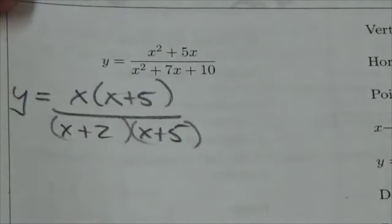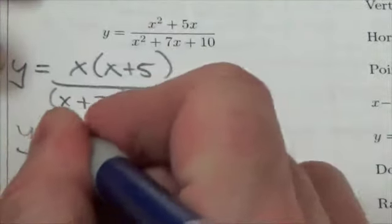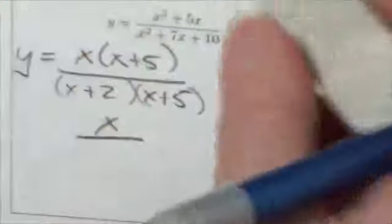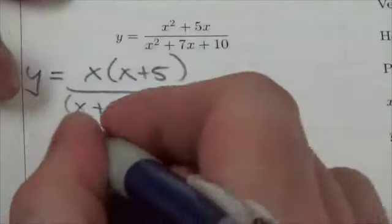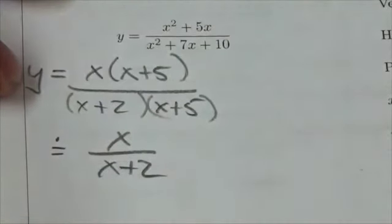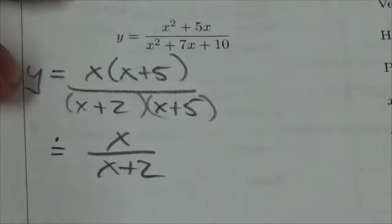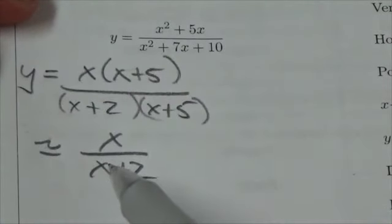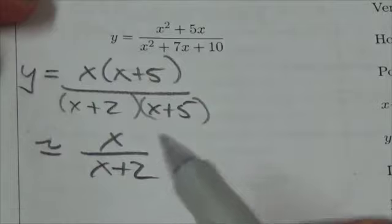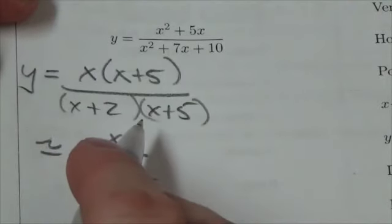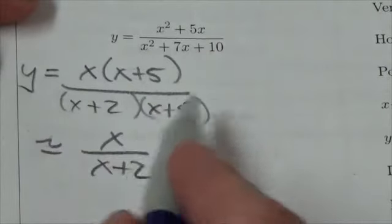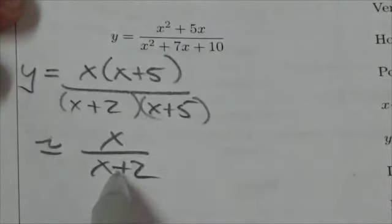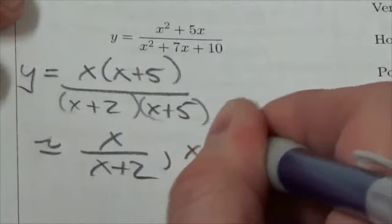I can see there's a common factor of x plus 5 in the numerator and denominator, which means those two will cancel. Now I should actually write it like this. I'm going to be really technical with this one. This is approximately equal to x over x plus 2. The reason why I say approximately—actually maybe that symbol's not even the right one. Maybe I should do it like this: it's equivalent. They're not equal to each other because although x plus 5 over x plus 5 is equal to 1 for most values of x, if x equals negative 5, this becomes 0 over 0, in which case I can't cancel that. So this is equivalent as long as I do not allow x to equal negative 5.